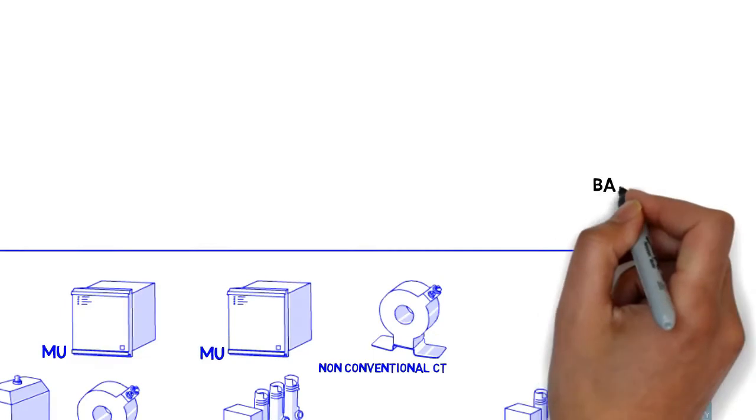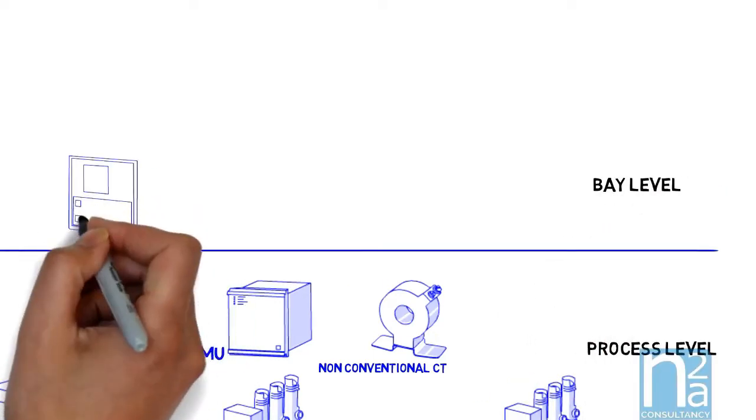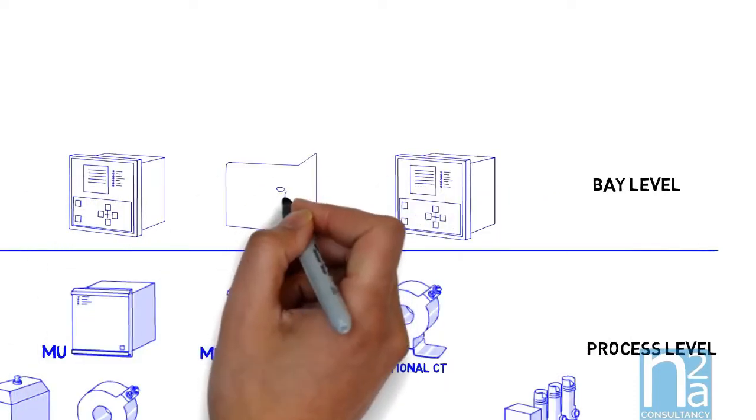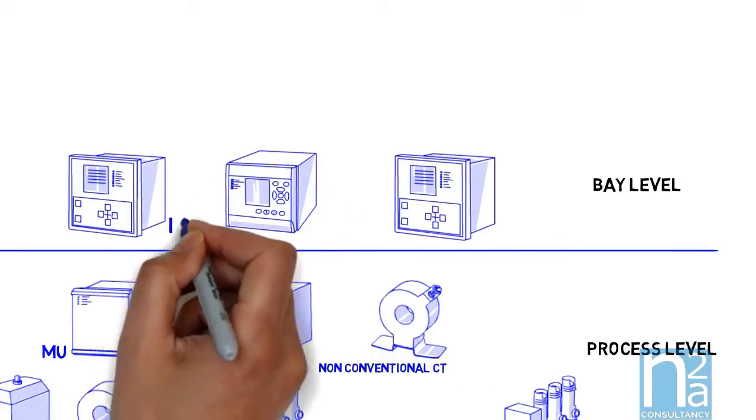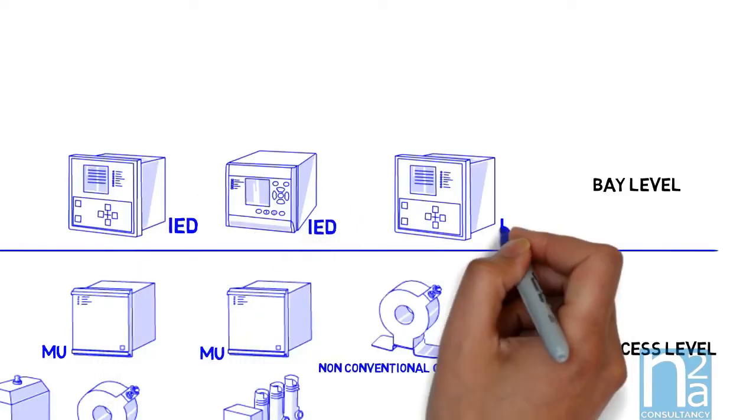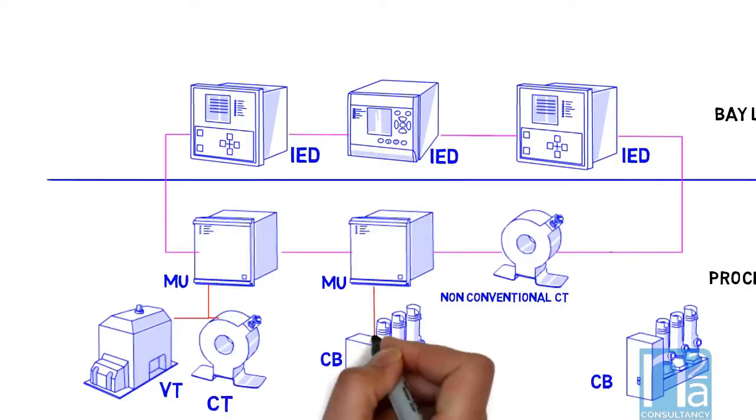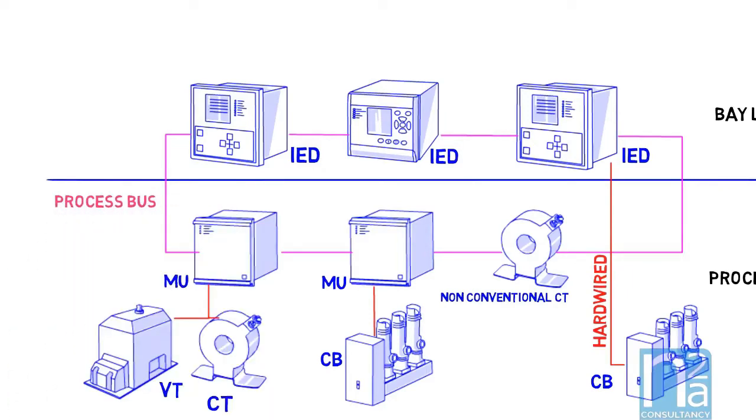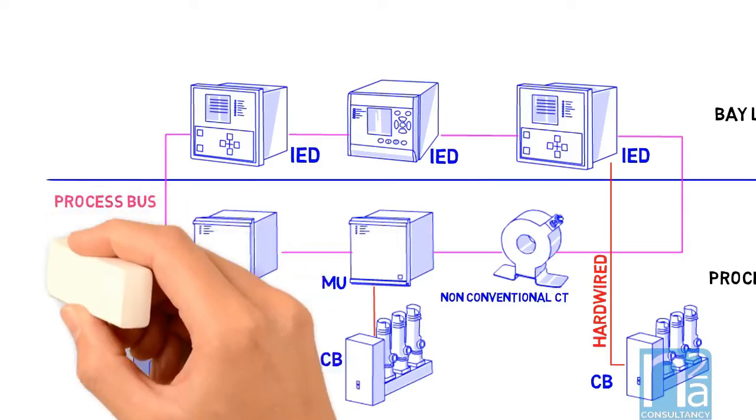The second level is the bay level where we have intelligent electronic devices called IEDs. IEDs is the new name of relays to reflect their capabilities to take decisions based on logic and information collected from the process level devices. IEC 61850 defines process bus to allow communications between IEDs and intelligent instrument and switchgear. Conventional CTs, VTs, and switchgear could also be connected through an analog digital converter called merging unit.